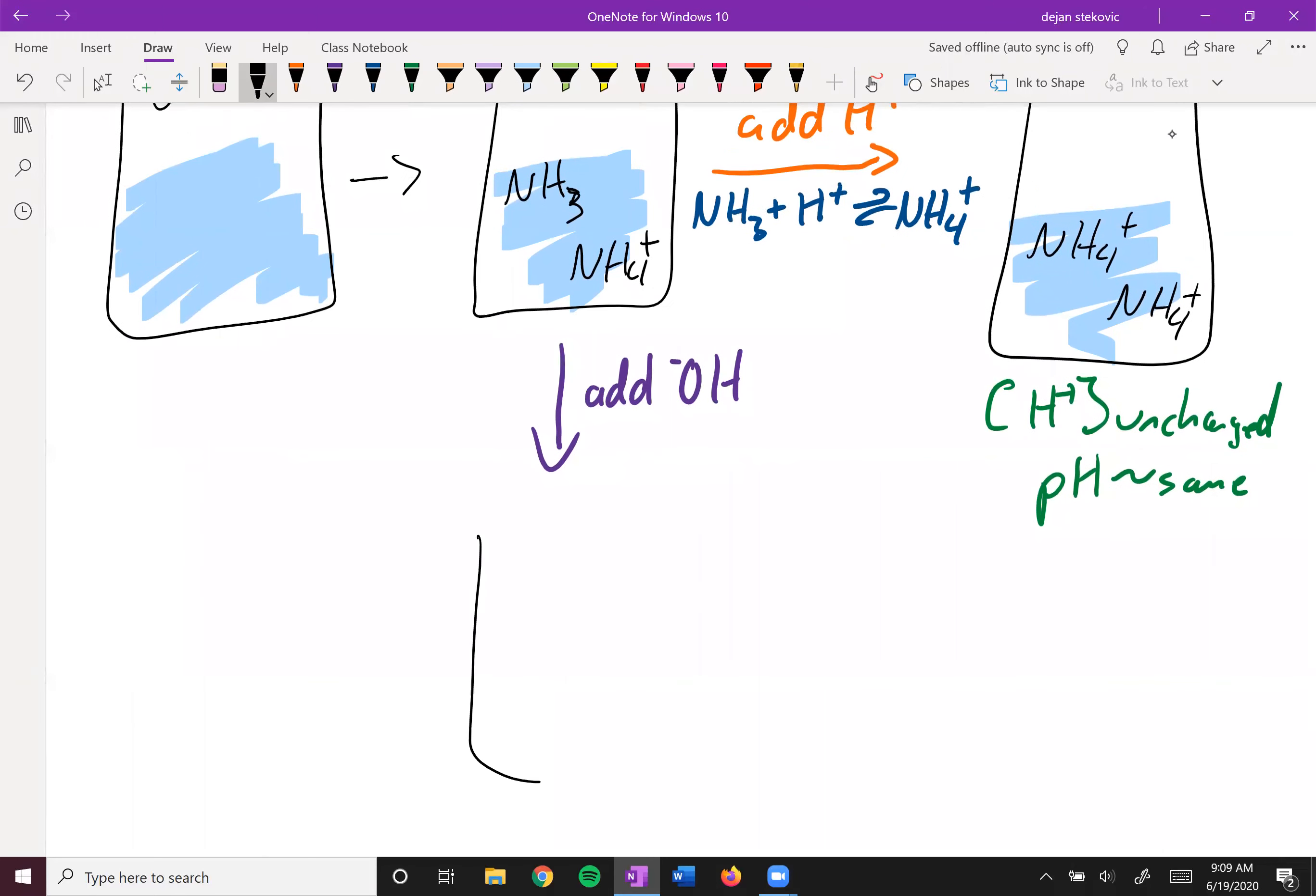And then same thing down here in this other example: when we add hydroxide, instead of that interacting with the water directly, our ammonium, our weak acid, is going to sacrifice an H+ instead. We'll add the addition of hydroxide and then we'll get some water plus just ammonia. Down here we will now have two ammonias, and so now our concentration of hydroxide is unchanged, and so the pOH and then also the pH stays approximately the same.